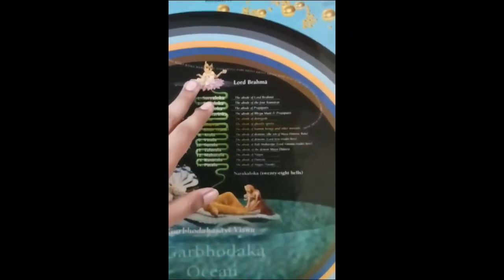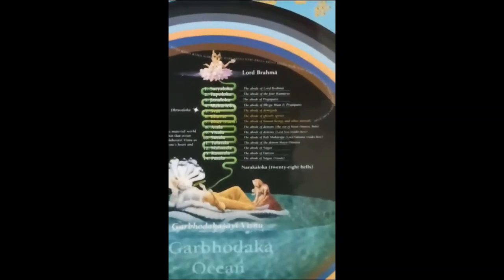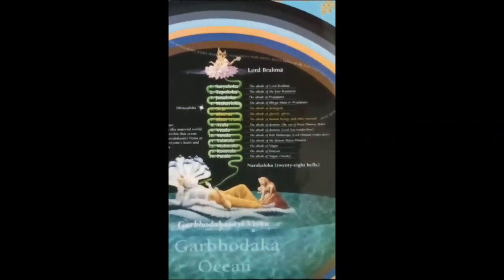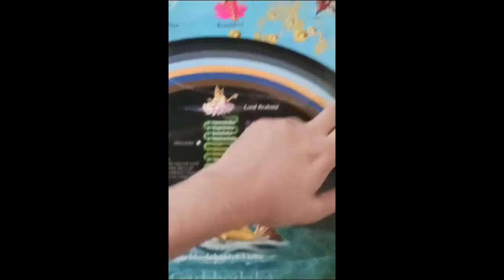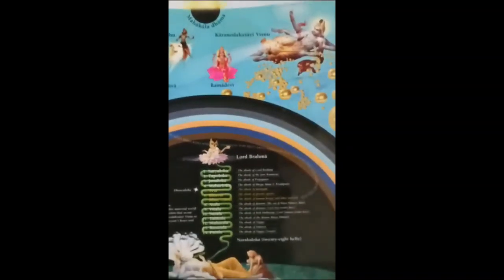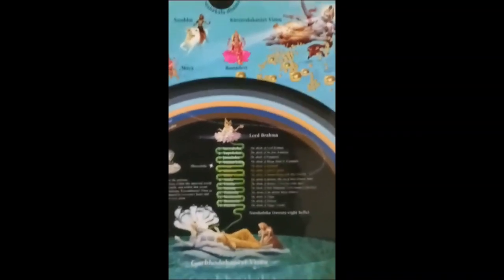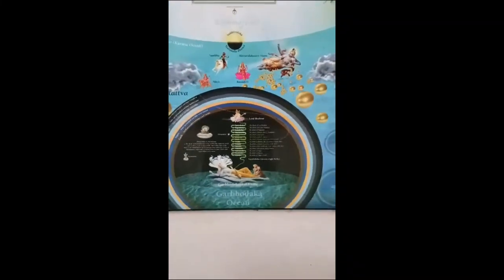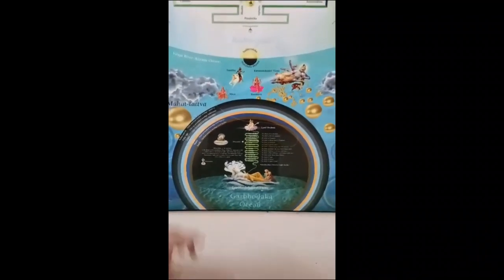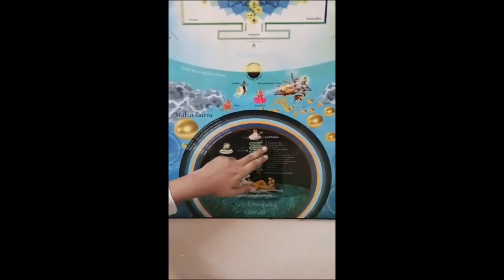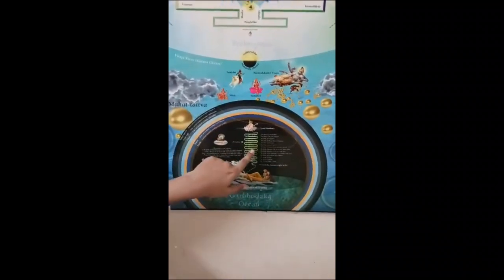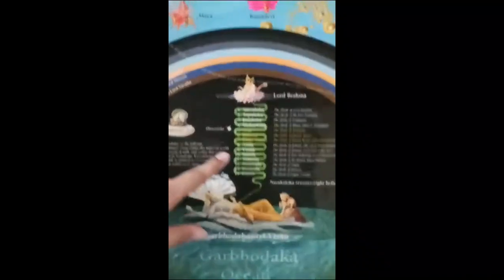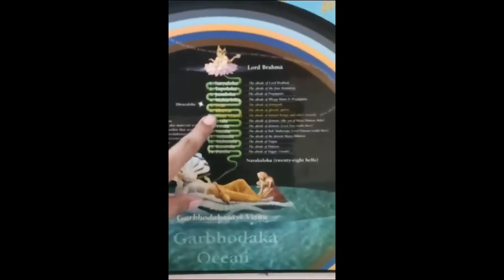Every universe has a Brahma. Our universe has a Brahma with four heads — Chaturmukhi Brahma. In other universes, Brahmas may have more heads — a thousand-headed Brahma, a one-lakh-headed Brahma, and so on. Brahma created the fourteen planetary systems. We are at Bhur Loka, the middle earthly planetary system.